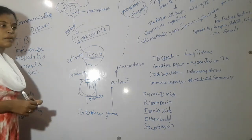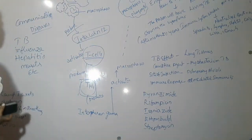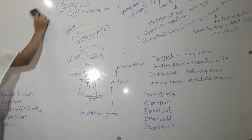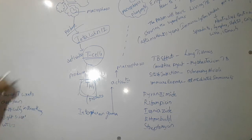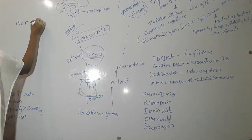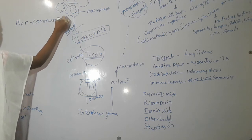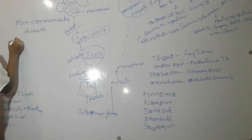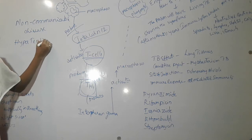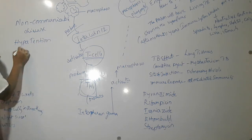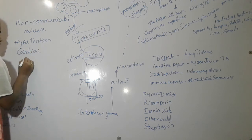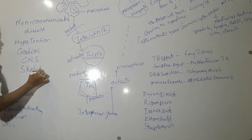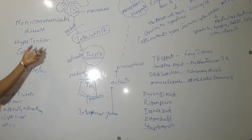When we are talking about communicable diseases, we also will talk about non-communicable diseases. Non-communicable diseases will never spread from one person to another person. Examples include hypertension, cardiovascular disorders, cardiac disorders, central nervous system disorders, and skeletal disorders. These are systematic disorders which will not spread from one person to another person.